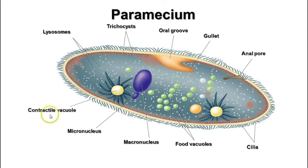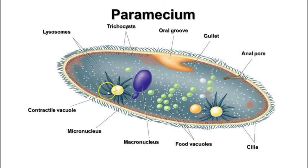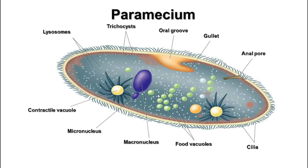Once the contractile vacuole fills up with water, it contracts quickly, squeezes out the excess water, and then collects it again. In the ciliates, you oftentimes see feeder arms that feed the water into the contractile vacuole. Paramecia usually have two contractile vacuoles, one at each end.